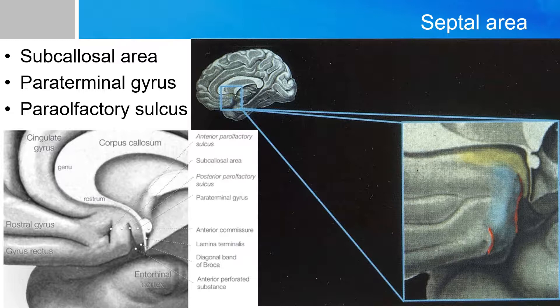This small septal area is contiguous with components of the limbic system curving around the corpus callosum, as well as structures on the inferior surface of the brain, such as the olfactory striae and the amygdalo-hippocampal region.